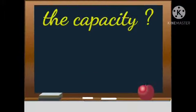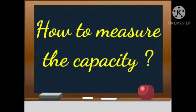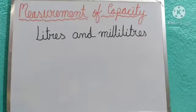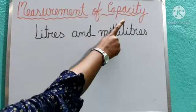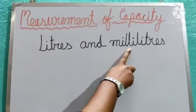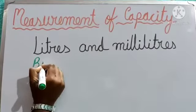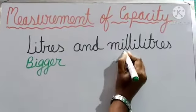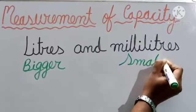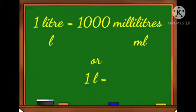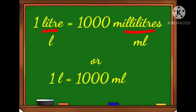Now, how to measure the capacity? We will measure capacity with the help of standard units. We measure capacity in liters and milliliters. Liter is a bigger unit and milliliter is a smaller unit. Now, 1 liter is equal to 1000 milliliters.